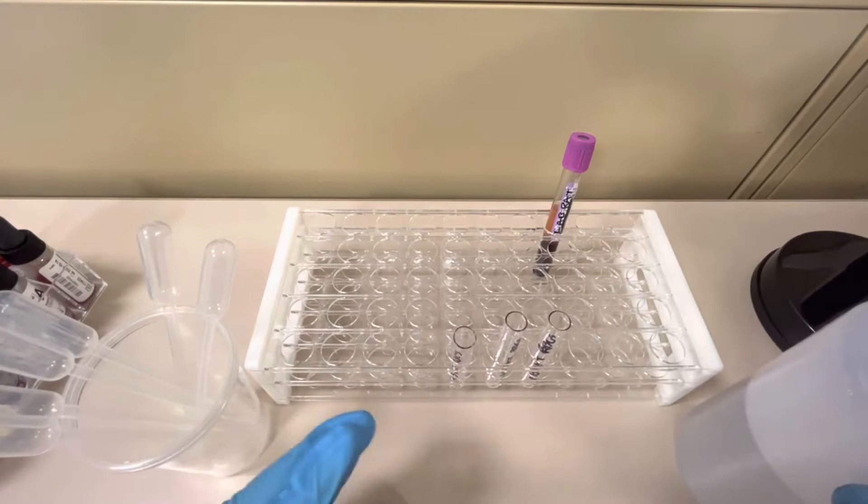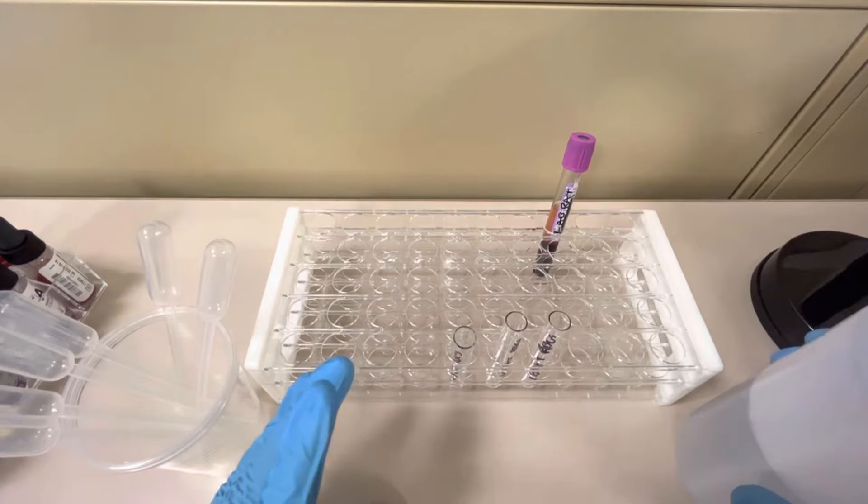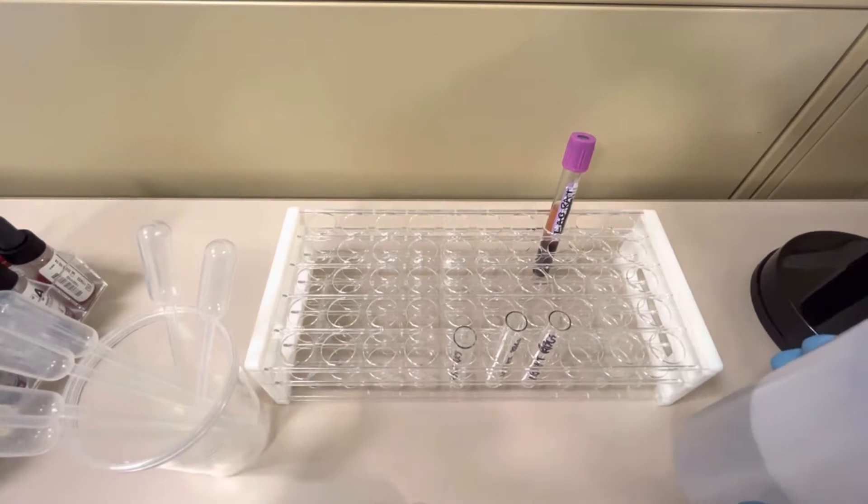So we can't just put straight red blood cells into reagents. We need to dilute it with saline first. The proper suspension is usually around three to five percent. I usually try to shoot for three percent.